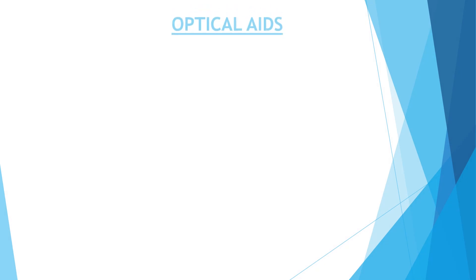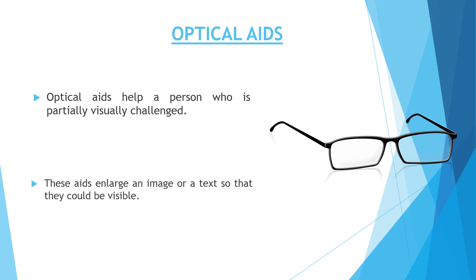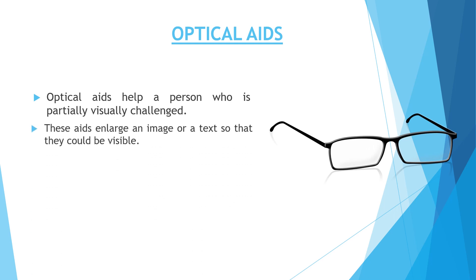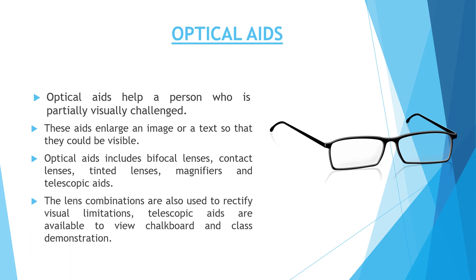First we will discuss optical aids. Optical aids help a person who is partially visually challenged. These aids enlarge an image or text so that it could be visible. Optical aids include bifocal lenses, contact lenses, tinted lenses, magnifiers, and telescopic aids. Lens combinations are also used to rectify visual limitations. Telescopic aids are available to view the chalkboard and class demonstrations.